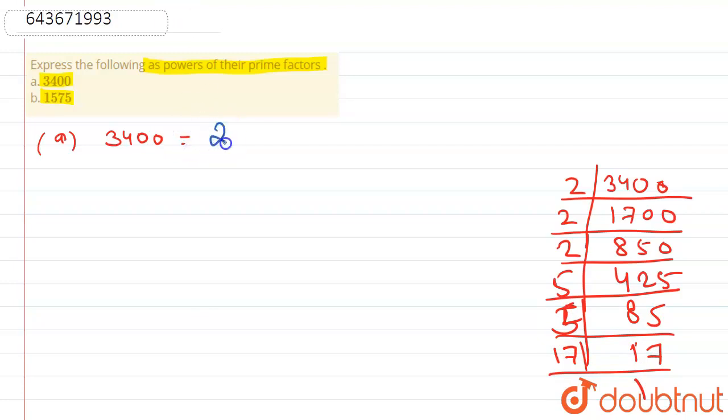So here this equals 2 times 2 times 2 times 5 times 5 times 17. Here we see that 2, 5, and 17 are the prime numbers, so we say that 2 cube times 5 squared times 17. These are the prime factors as powers.